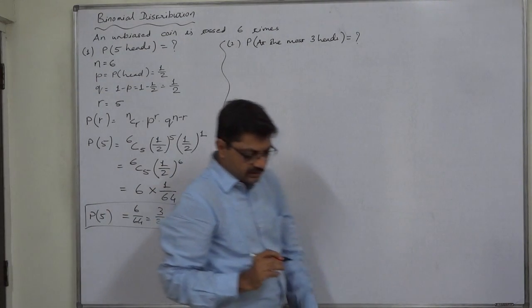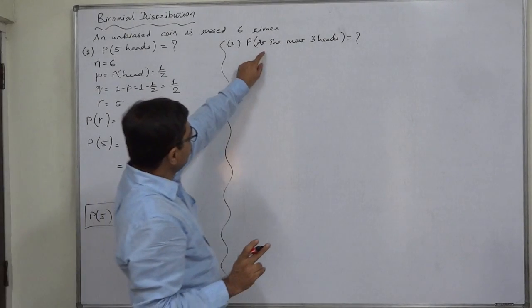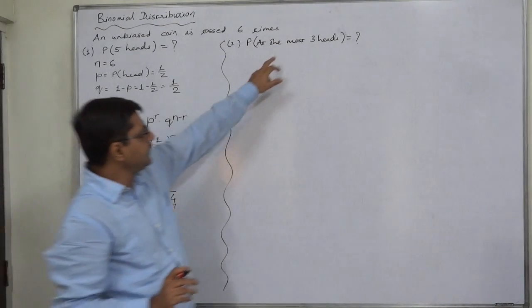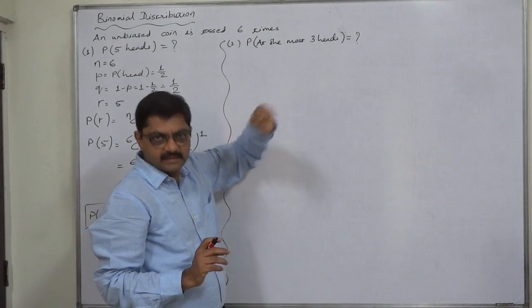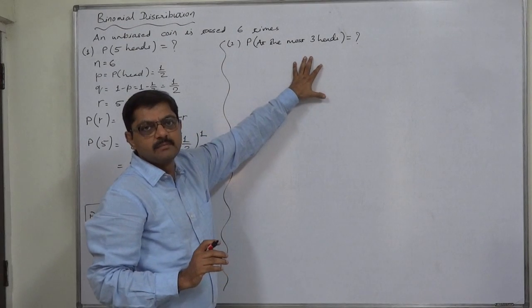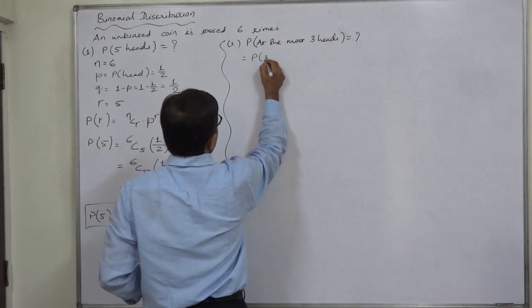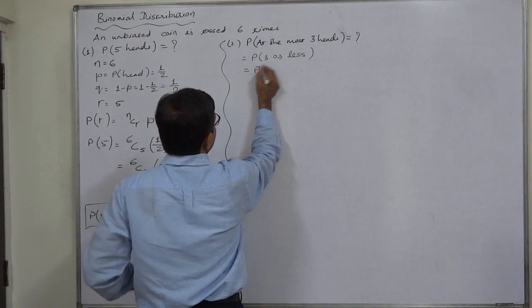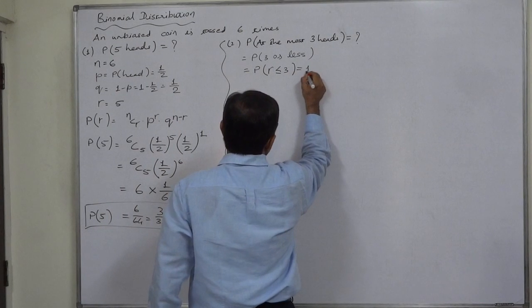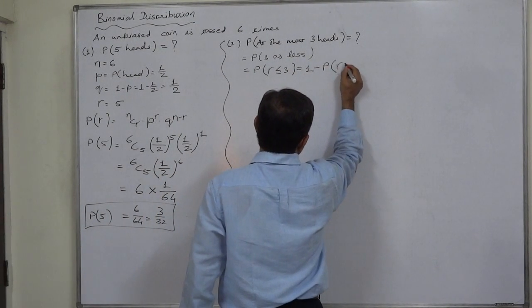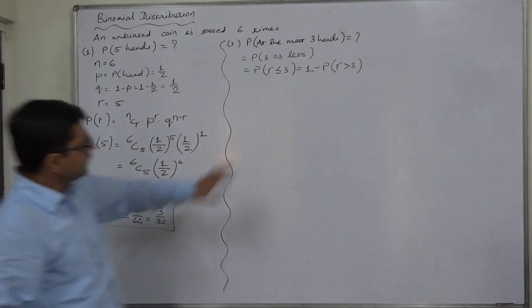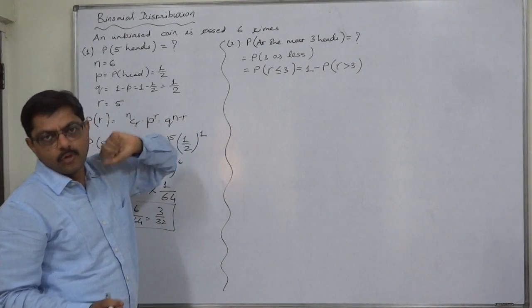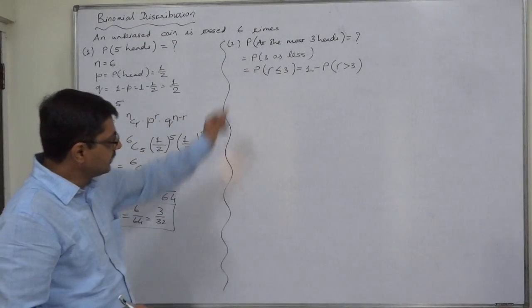Another case is not that straightforward or easy: probability of at the most three heads. Be careful when you face the term like at the most, at least, etc. At the most three means maximum three, that means three or less. That is actually P of R less than or equal to three. That is also P of one minus P of R greater than three. We can calculate directly by this formula: three or less means three or two or one or zero. We have to calculate four probabilities and the summation will be the final answer.